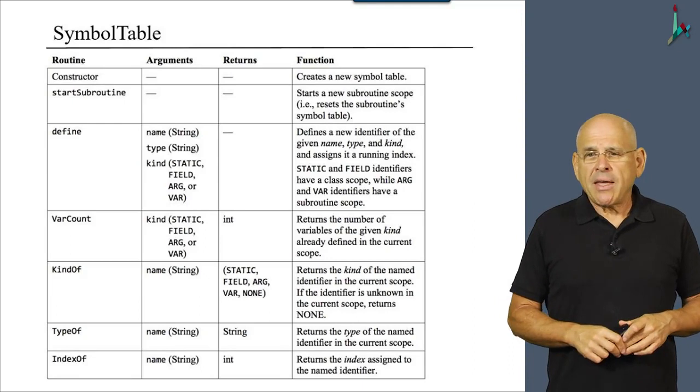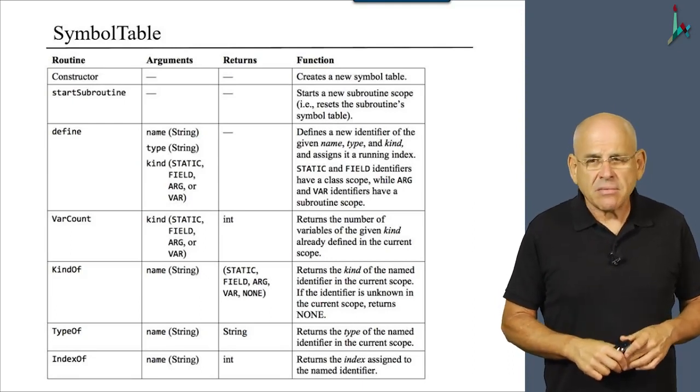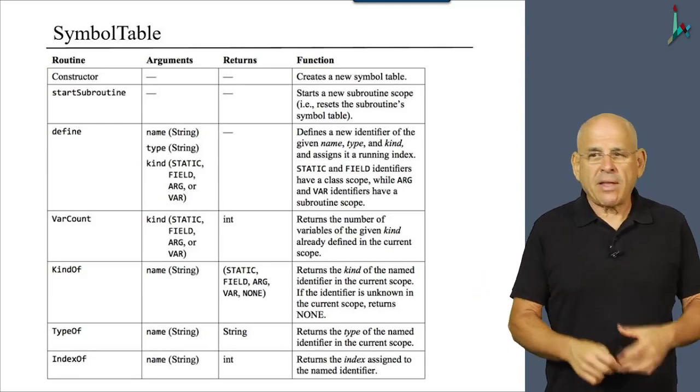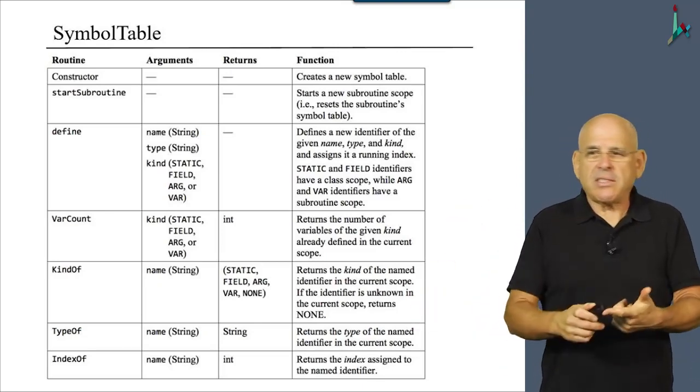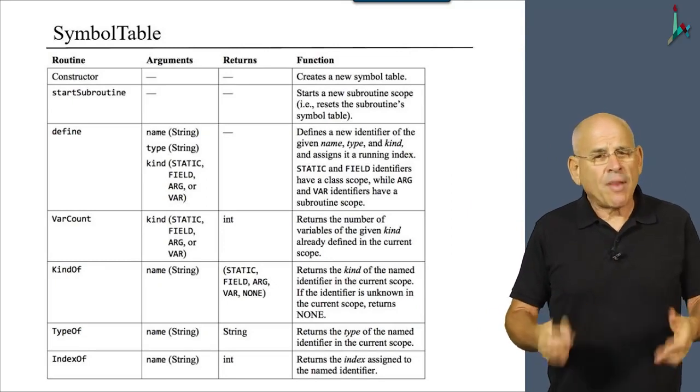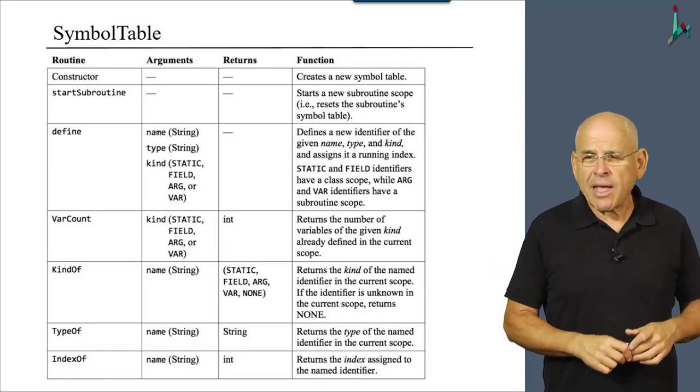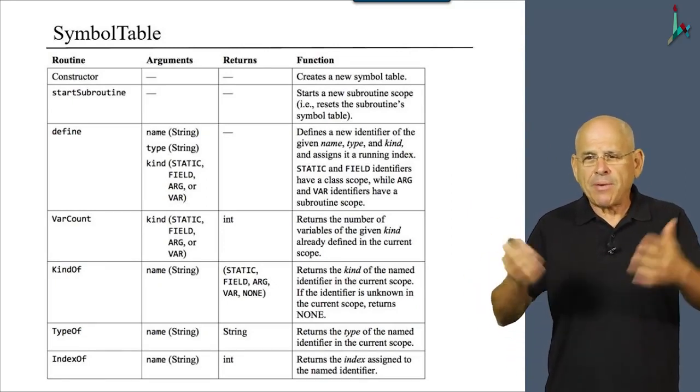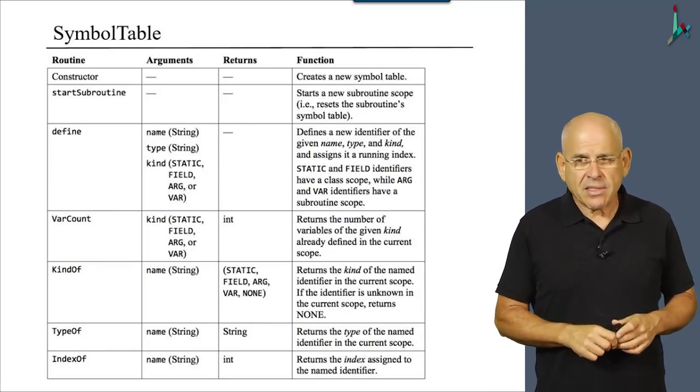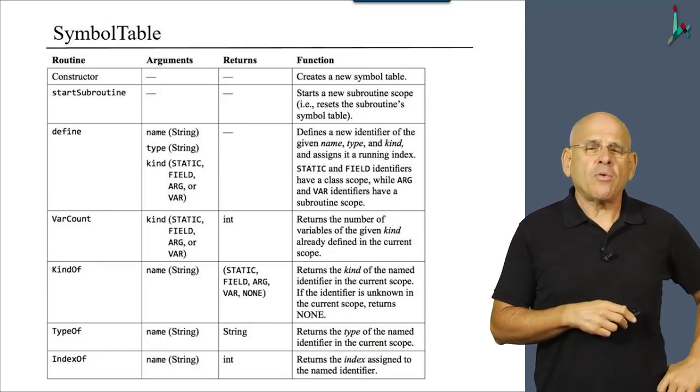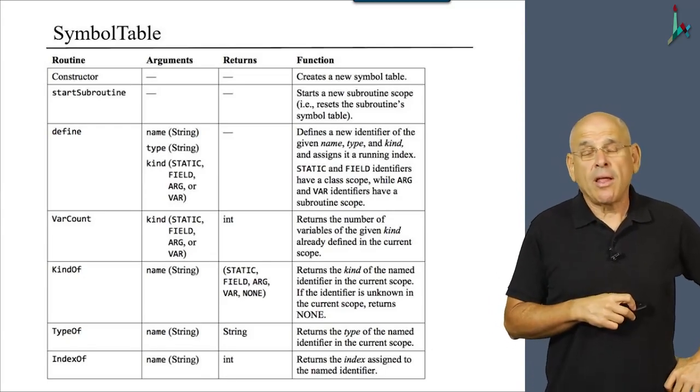So we can say, what is the kind of x? Kind of x. Well, it can be, the method will say, it will look up the table. It will say, it's static field, something else. What is the type of x? Well, once again, the method will go to the symbol table and will say the type is such and such. And same with index. So these routines are also very helpful when you generate code for obvious reasons.